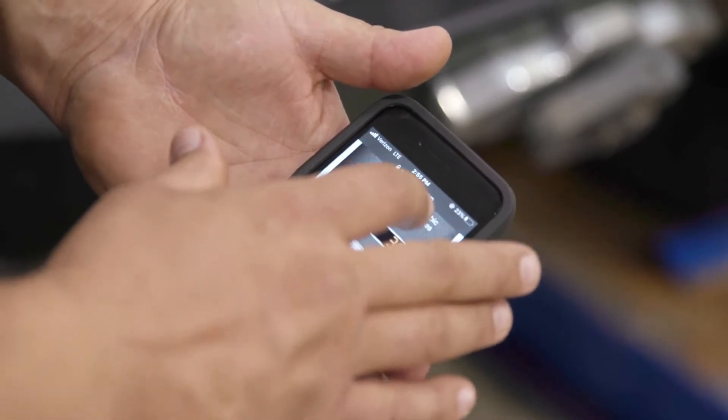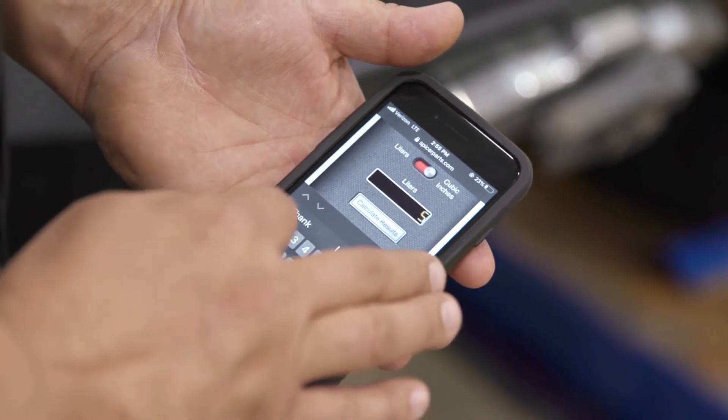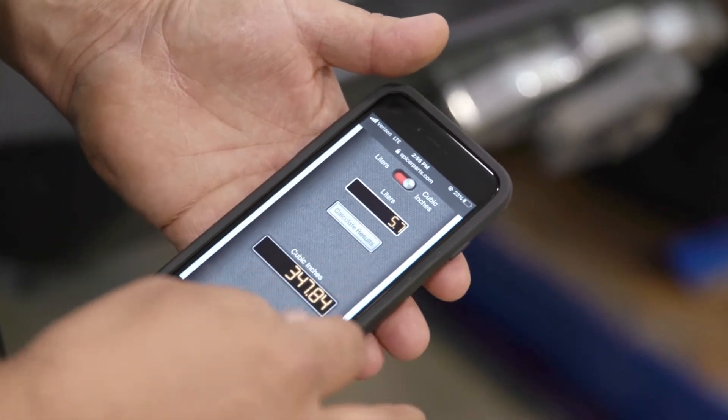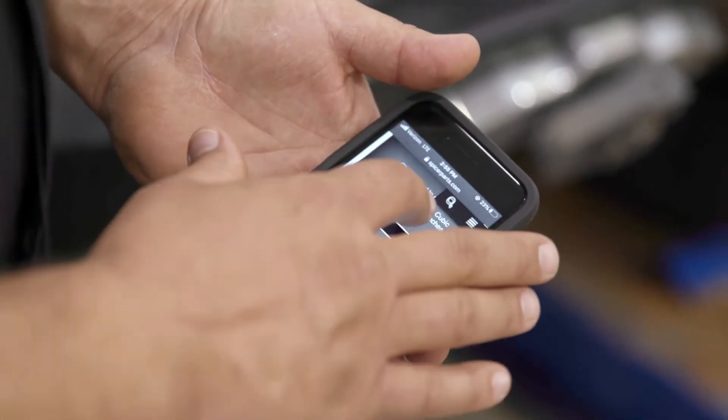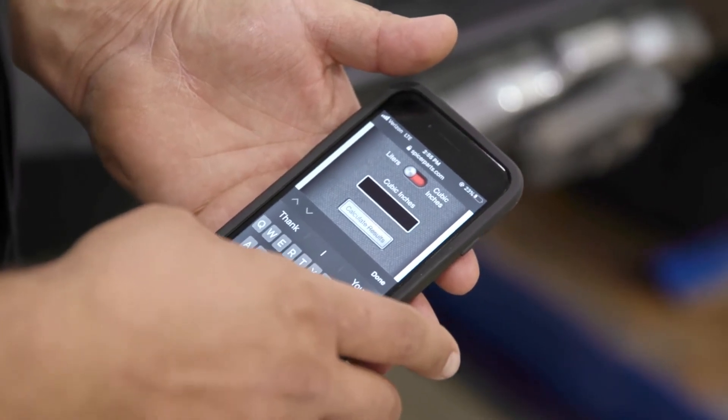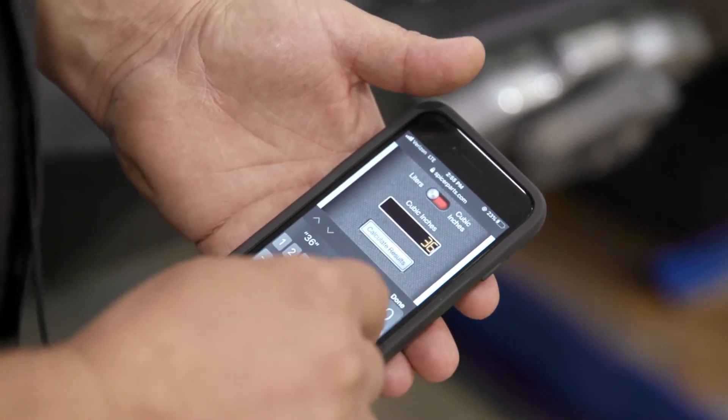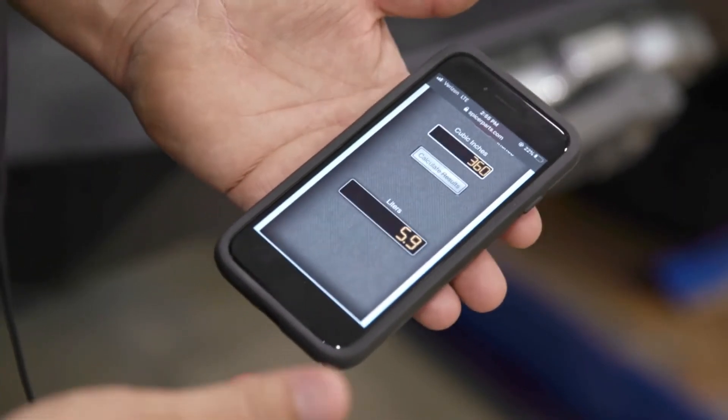But if it's the other way around, if we know the cubic inches - say if we have 360 cubic inches of AMC Fury, we know that that's 5.9 liters.